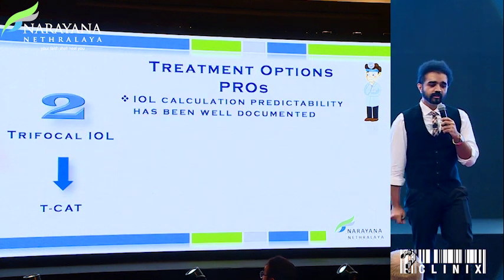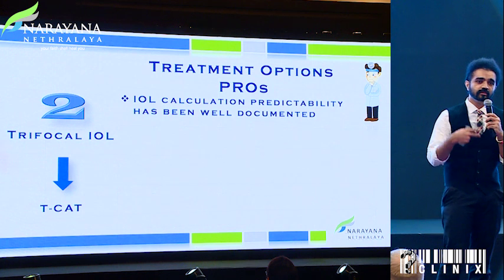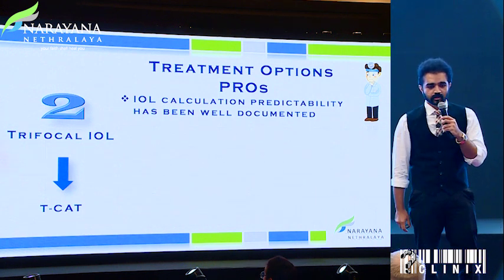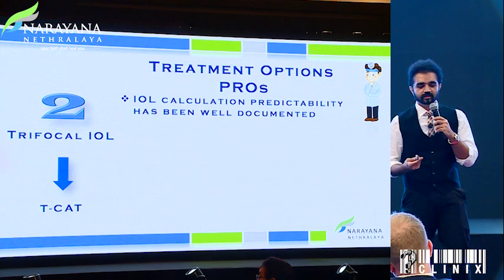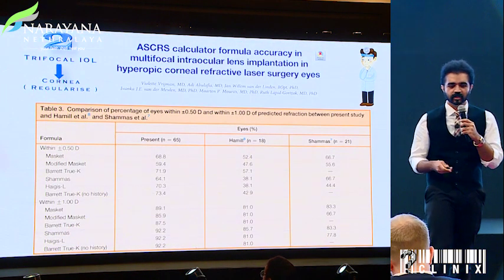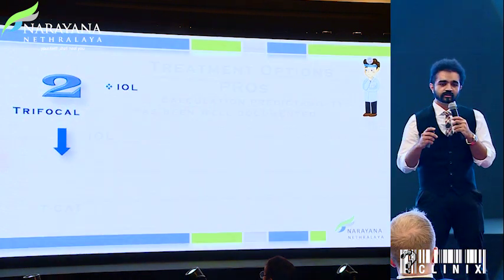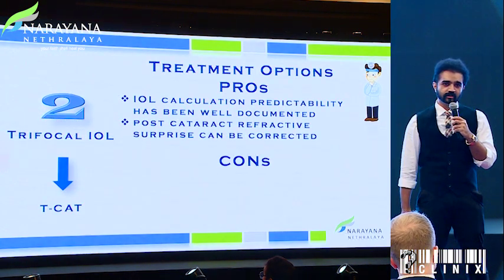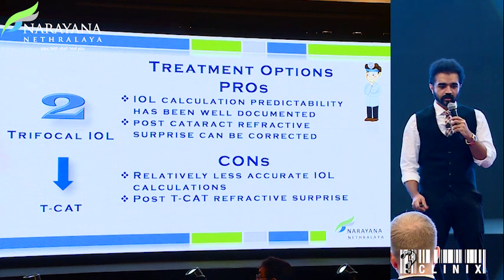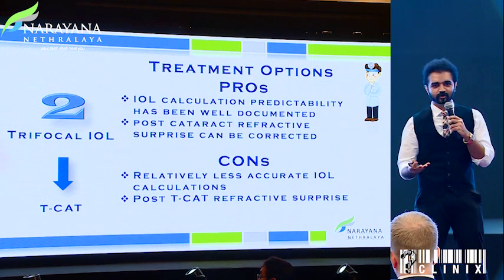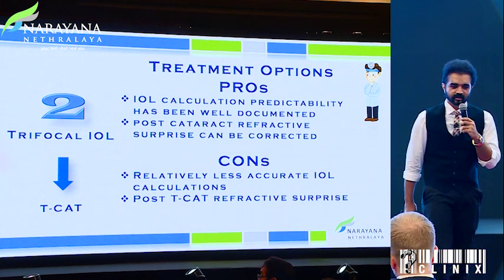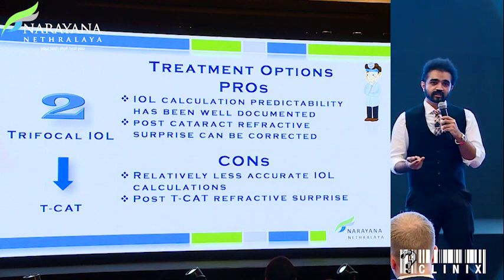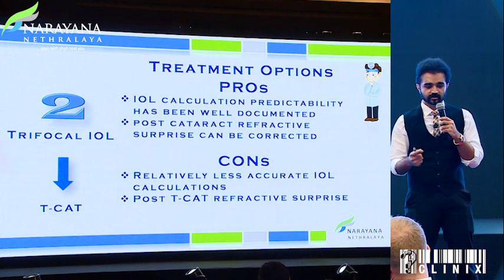Looking at option two — implant the lens first and then plan a corneal procedure — in terms of IOL predictability, it's been documented that about 92% of the time there is less than one diopter of error. That's one advantage, but with a trifocal or multifocal IOL, anything more than 0.75 diopters is not ideal. However, if there are post-refractive surprises, you have an opportunity to treat them afterward, which is one advantage.